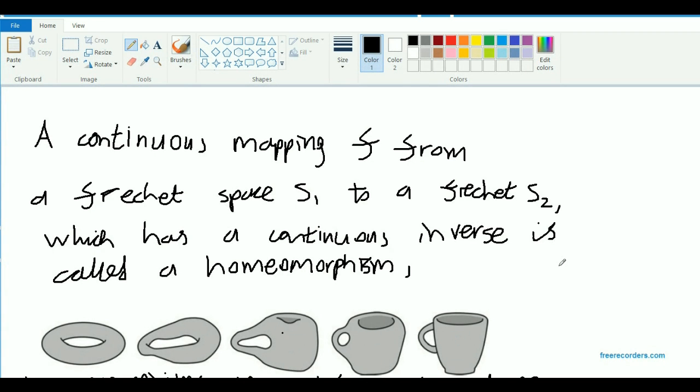if it happens that there is an inverse to this map F, which is also continuous, in other words, if this continuous mapping F from S1 to S2 has a continuous inverse, then this continuous mapping F is called